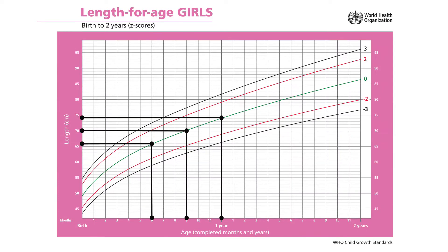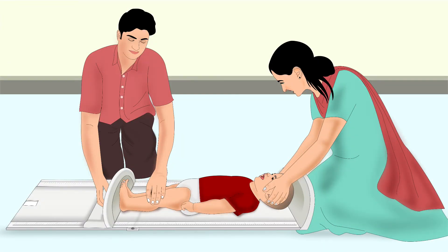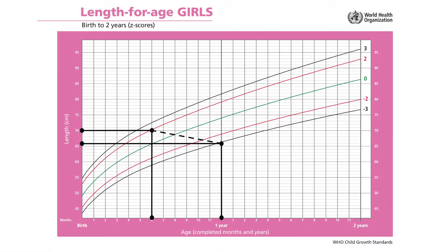Check whether a plotted point seems sensible. If necessary, remeasure the child. For example, a baby's length should not be shorter than at the previous visit. If it is, then one of the measurements was wrong.